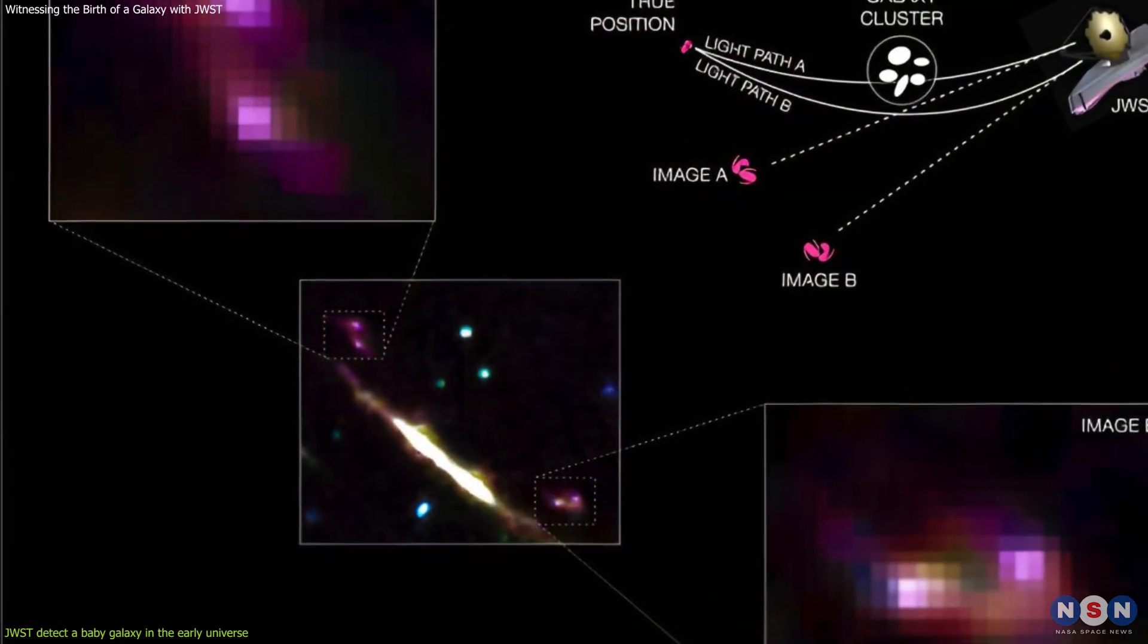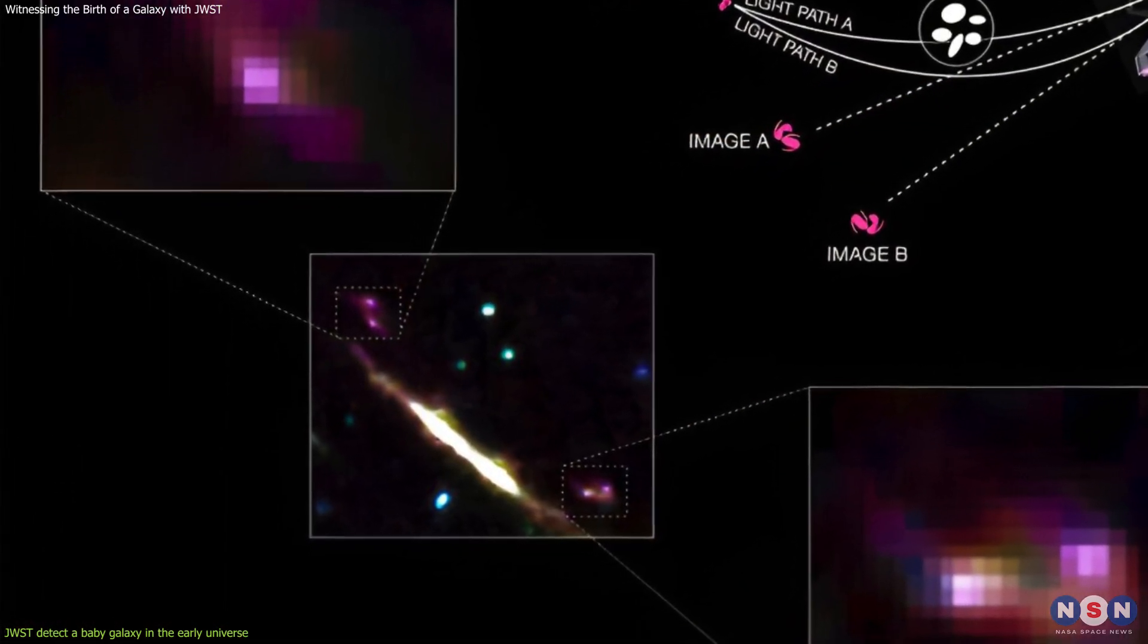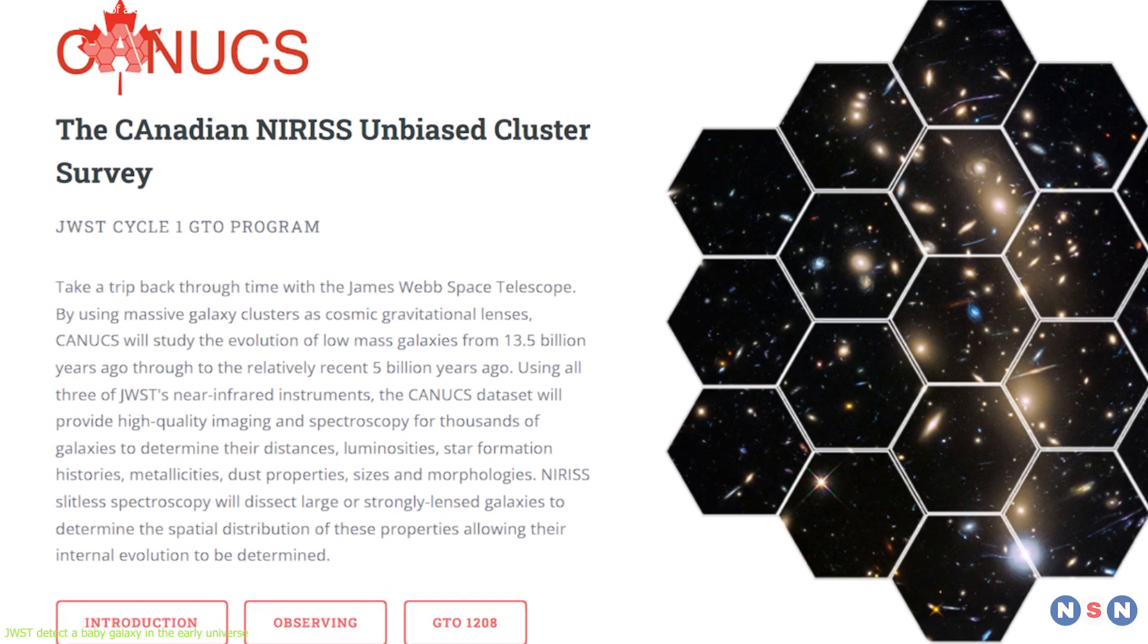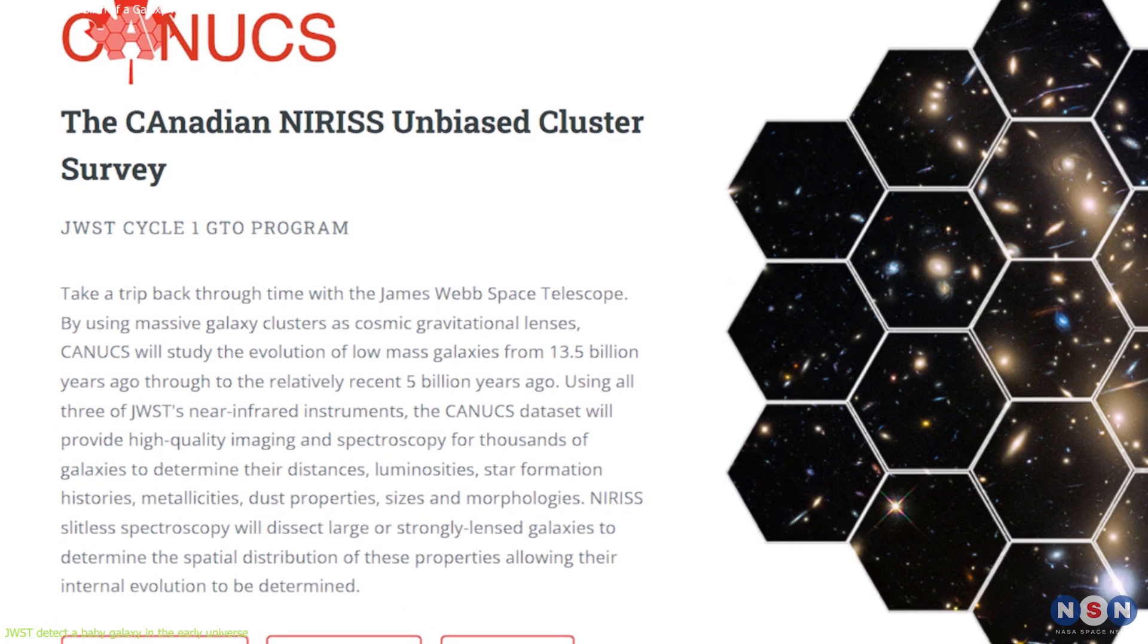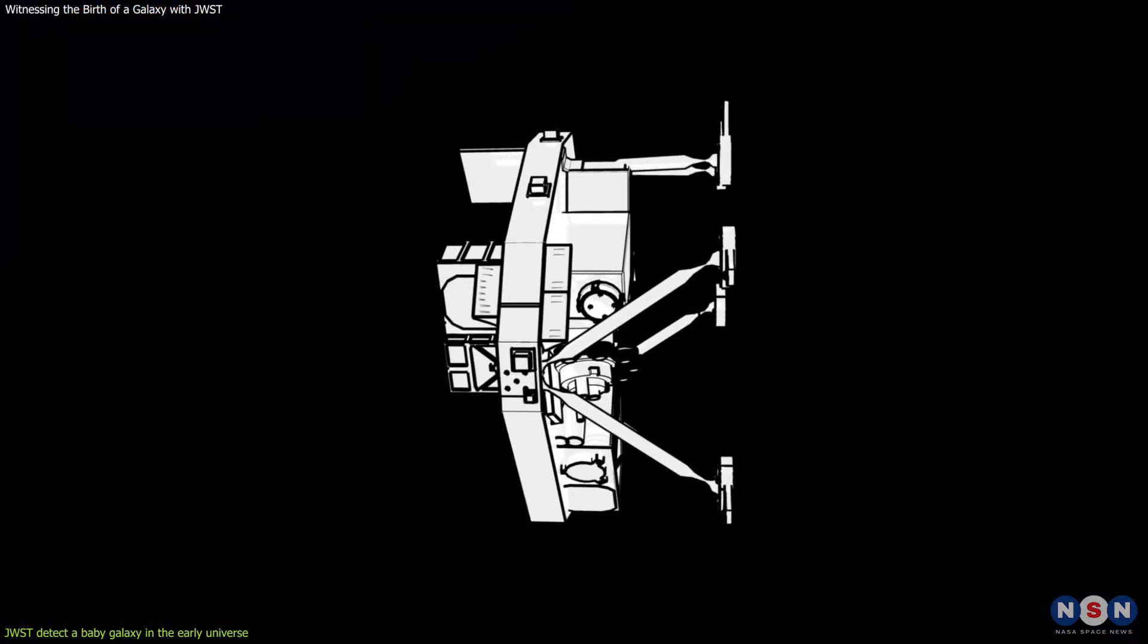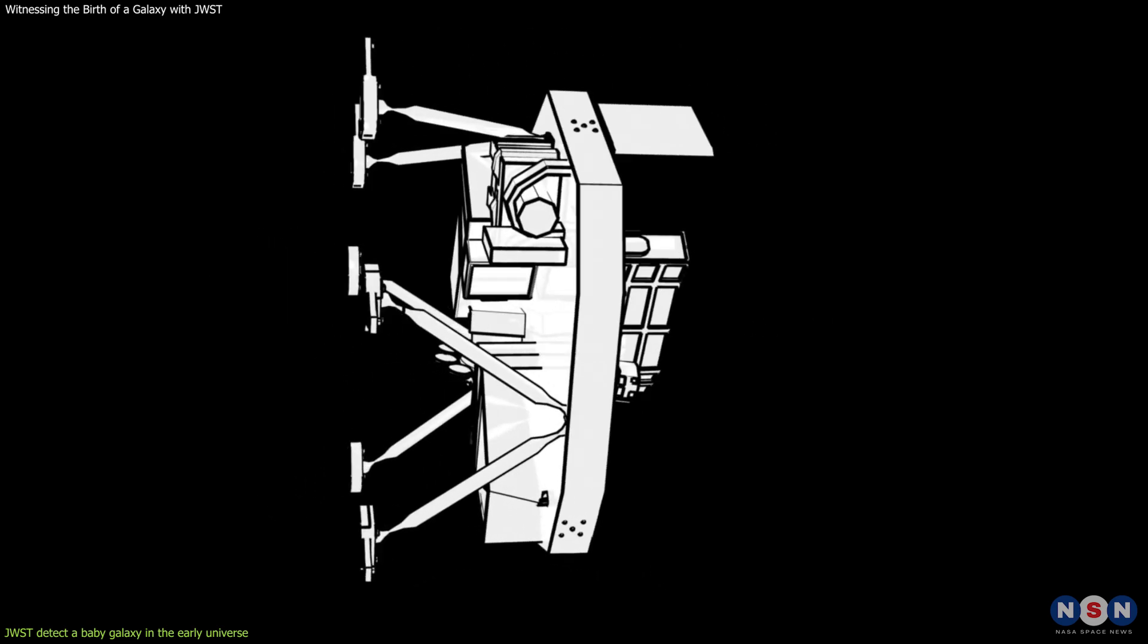One of these objects is a baby galaxy that was discovered by an international team of astronomers who are part of the Canadian NIRIS Unbiased Cluster Survey, or CANUCS, a project that uses one of Webb's instruments, called NIRIS, to study the evolution of galaxies.